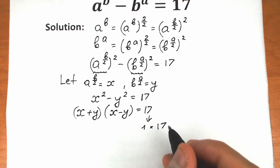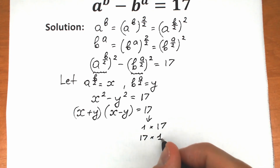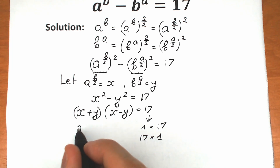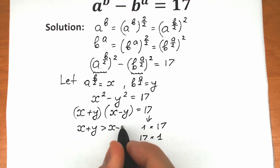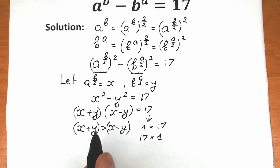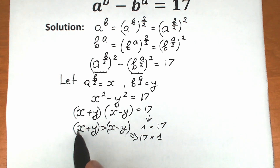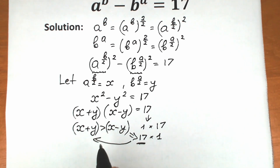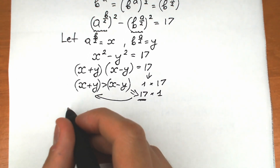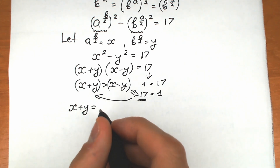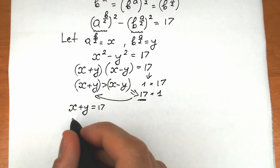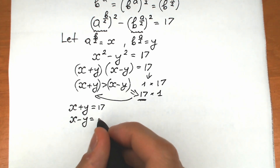Since 17 is a prime number, the only way to express it as a product of two integers is 1 times 17 or 17 times 1. Since x plus y is greater than x minus y, the larger factor must be 17 and the smaller must be 1. So our system is: x plus y equal to 17, and x minus y equal to 1.